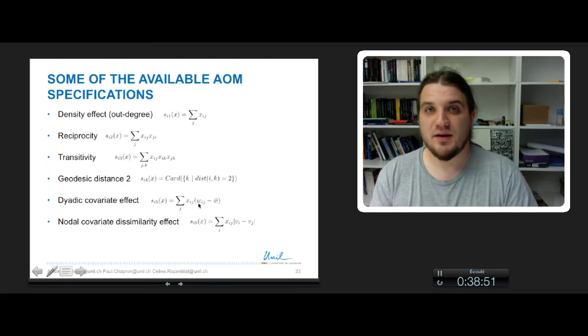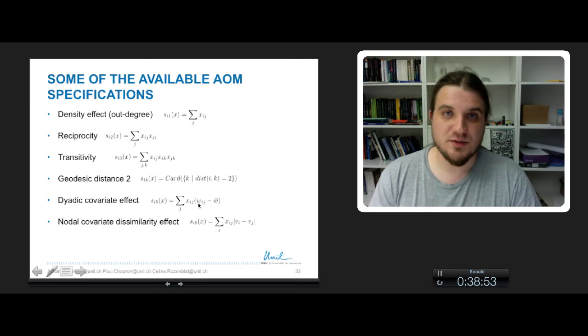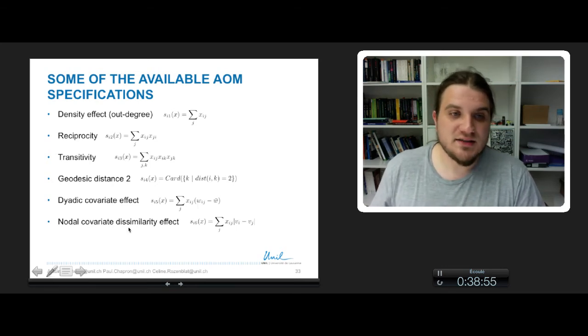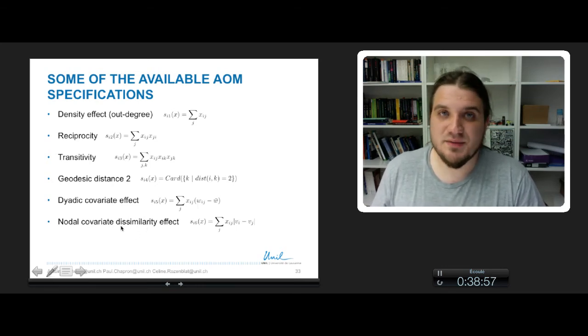And finally, when you have node variables, co-variables, co-variates, you can add some effect, for example, let's say dissimilarity,